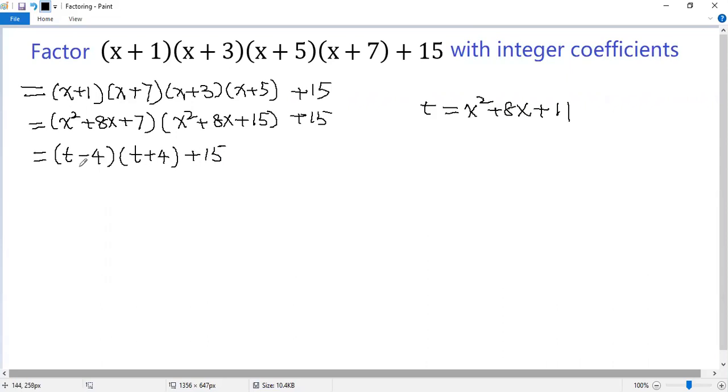Now we can apply the difference of squares formula. So we get t squared minus 4 squared plus 15, which is t squared minus 1. Now we can factor it, so we get t plus 1 times t minus 1.